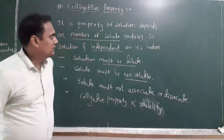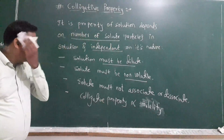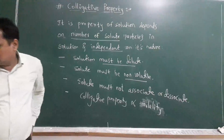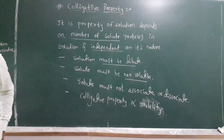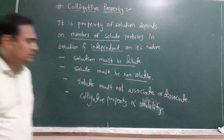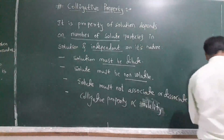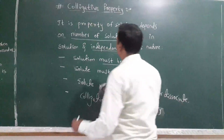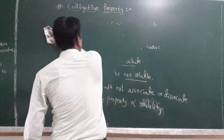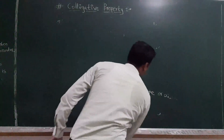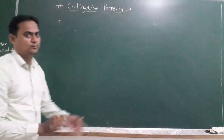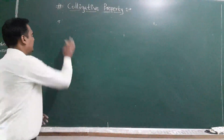This was the introduction regarding colligative property. Now there are four types of colligative properties. Let us see what the four colligative properties are.